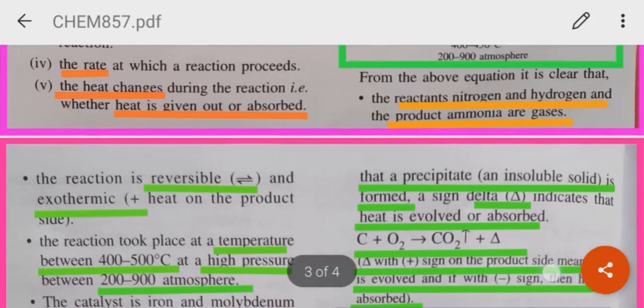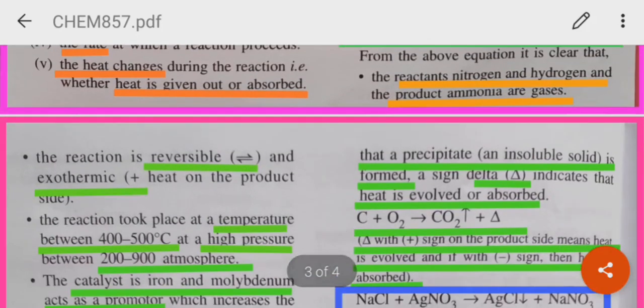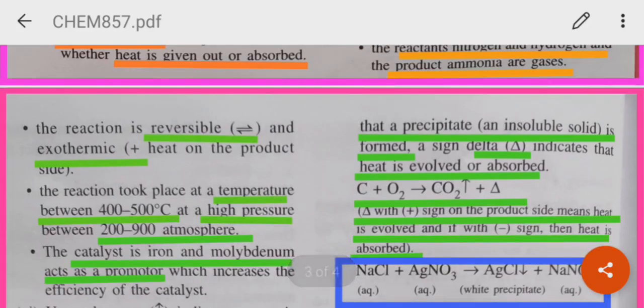Upward arrow indicates a gas is evolved. Downward arrow indicates that a precipitate. Now, what is a precipitate? An insoluble solid formed in a chemical reaction is called as a precipitate. A sign of delta indicates that heat is evolved or absorbed.